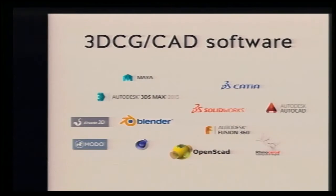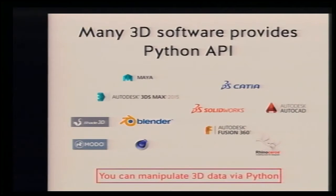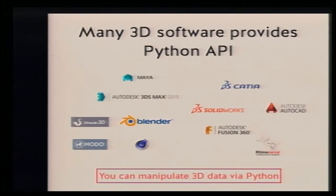Many people use existing software like Maya, 3ds Max, Blender, SolidWorks, or Rhino. Fortunately, this kind of software provides a Python API, which means you can manipulate and control your 3D data through Python scripts. I'm not familiar with 3D CAD or CG software, so I started creating 3D models using Python scripts. I call this method 'script modeling.'